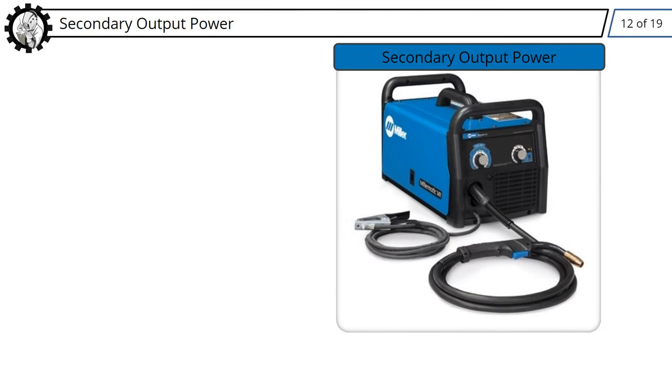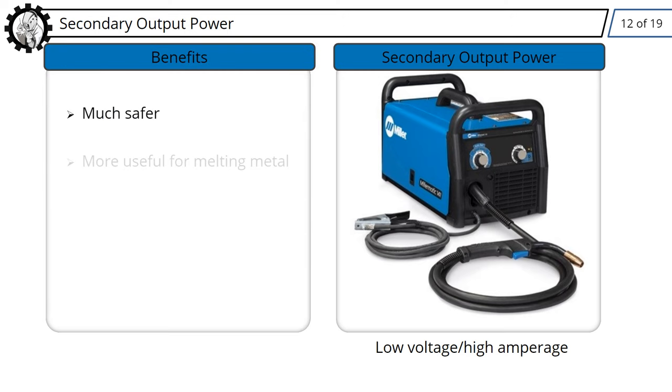Secondary power output. Secondary power output is what's produced by the welding power source. It's been changed from the high voltage, low amperage primary to a low voltage, high amperage welding output that is much safer and much more useful for melting metal when welding. The secondary output power of the welding power source allows the welder greater control over the welding output being produced.